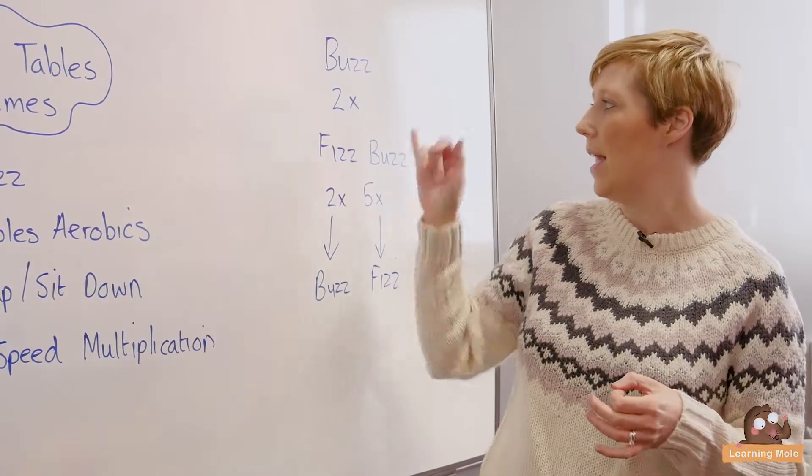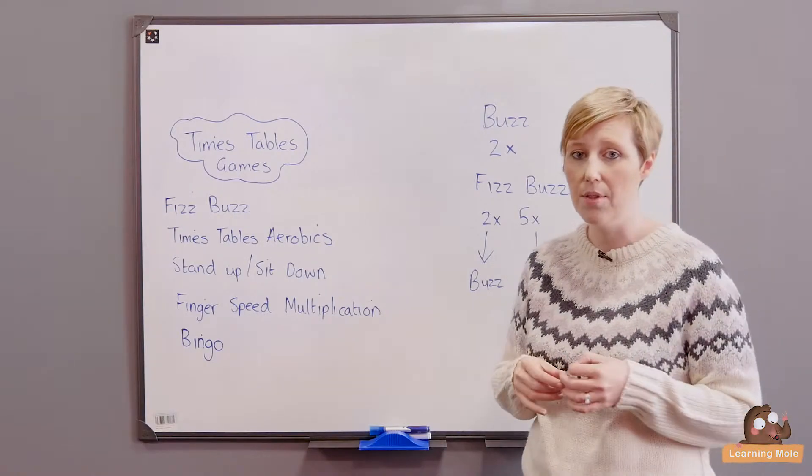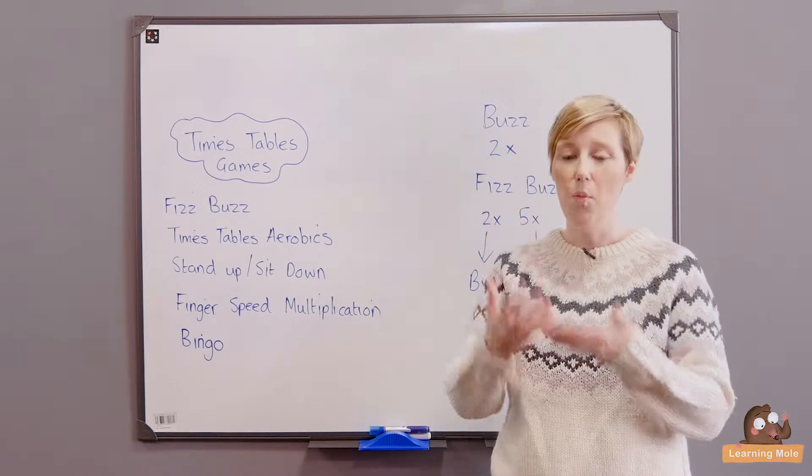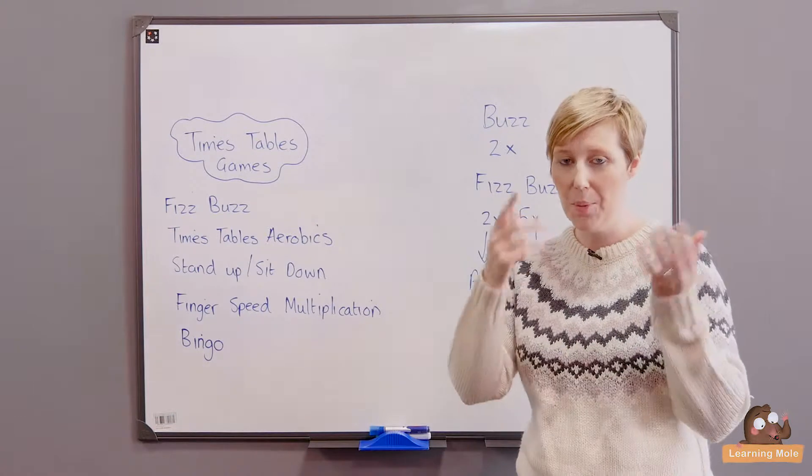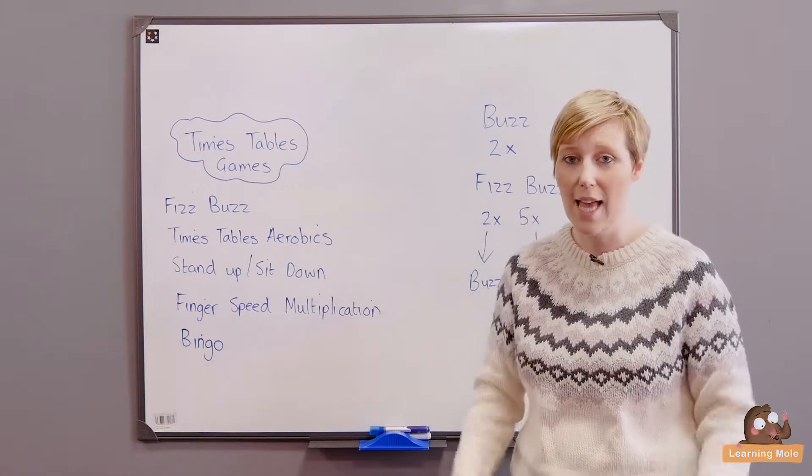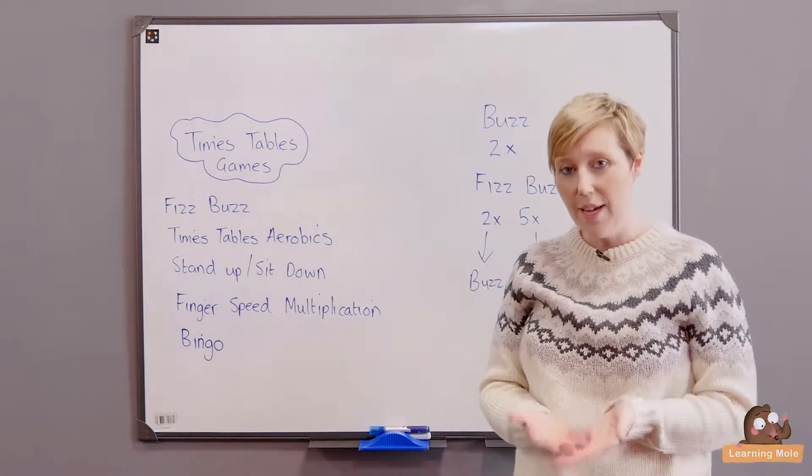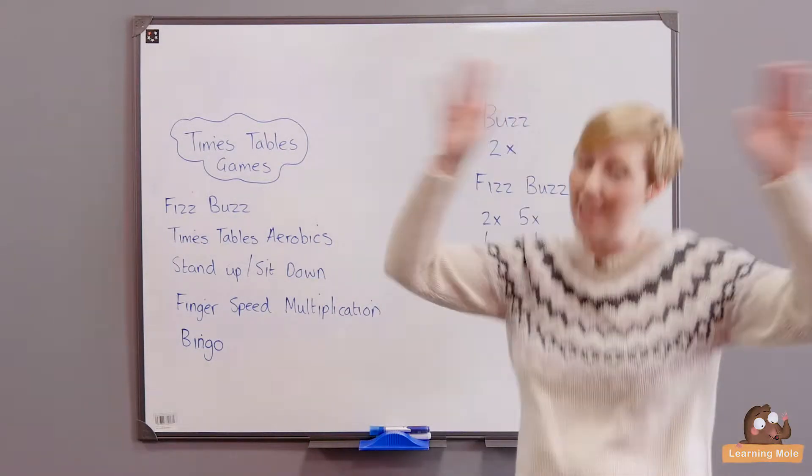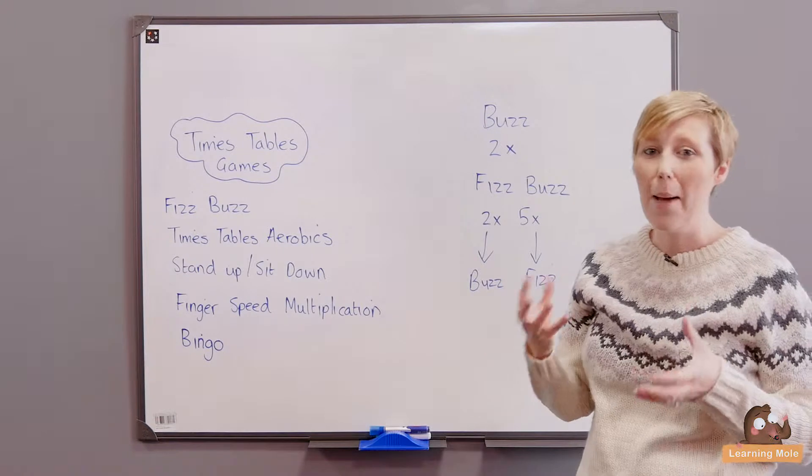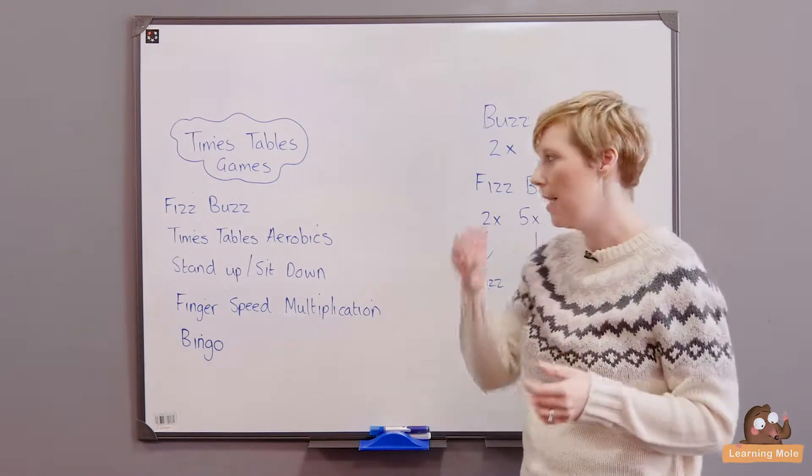For example, if I'm choosing the two times tables and we start counting, we say one and then for multiples of two it's going to be a star jump. So it'll be one, and everybody can do it together: two, three they stand still, four, five they stand still, six. And again it's just relating that movement to maths and really getting that interactive element in.